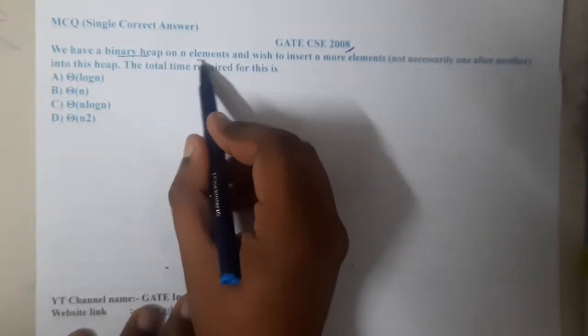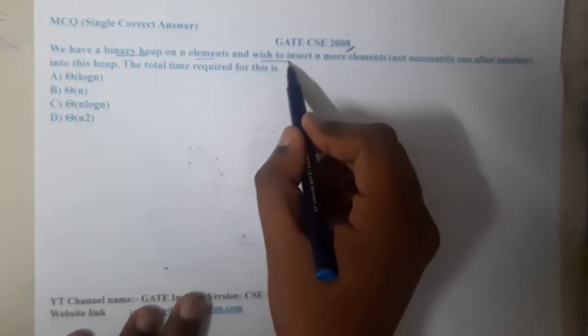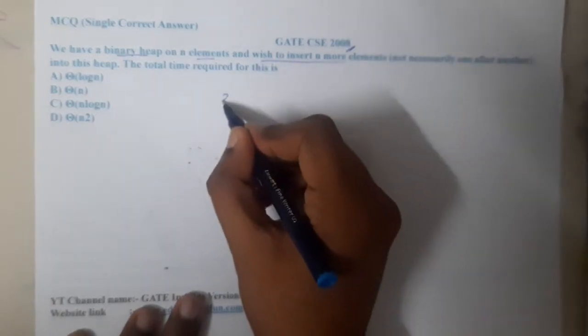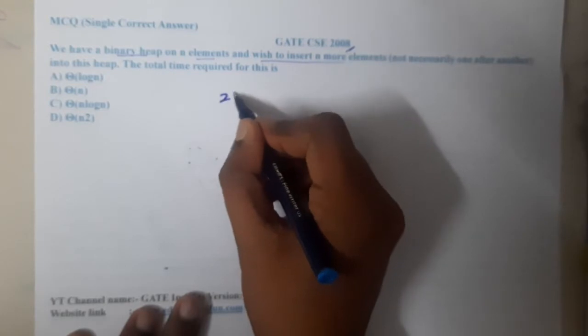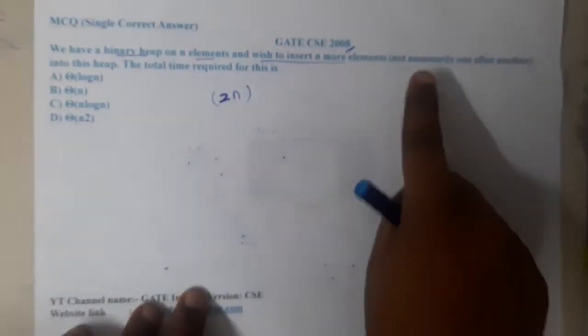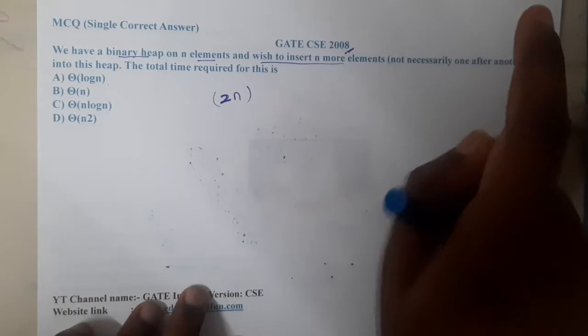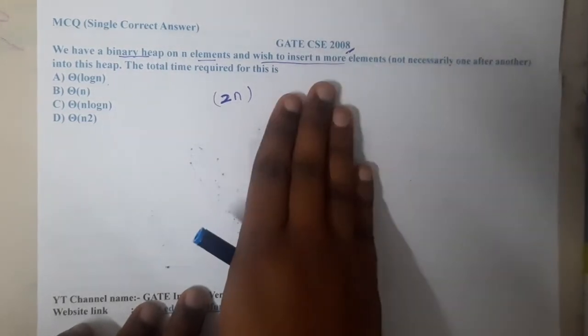We have a binary heap of n elements and we wish to insert n more elements. So in total, how many elements are there in our heap now? It is 2n, right? Not necessarily one after the other, so we are not going to insert one after the other.